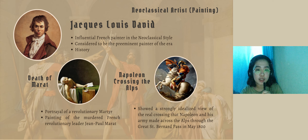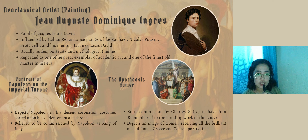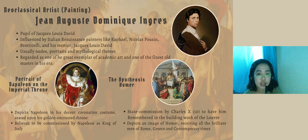Also, Jean-Auguste-Dominique Ingres, under the influence of Italian art, particularly Raphael, mastered portraiture. He also painted small pictures illustrating literary texts and scenes from French history, which were sold to French collectors. He returned to France and became the director of the French Academy. Some of his works are Portrait of Napoleon on the Imperial Throne, which depicts Napoleon in his coronation costume seated upon his golden-crusted throne, and The Apotheosis of Homer, a symmetrical composition depicting Homer being crowned by a winged figure personifying victory, with 44 additional figures paying homage to the poet.